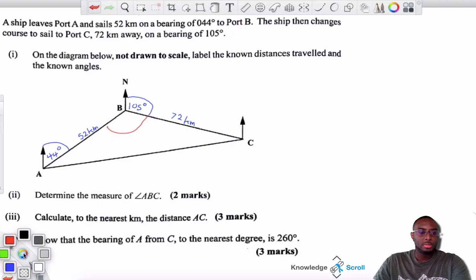Now, what I would do first is try to work out the angle here at B and you should remember that the angle at B and the angle at A are supplementary. So if I take 180 degrees and I take away the 44 degrees, I should get an angle of 136 degrees, which should go here.